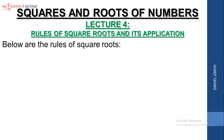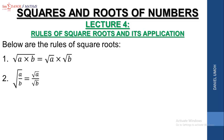Below are the rules of square roots. The first rule says that the square root of a times b is the same thing as the square root of a times the square root of b. Please take note of this rule. The second rule says that the square root of a over b equals the square root of a all over the square root of b.